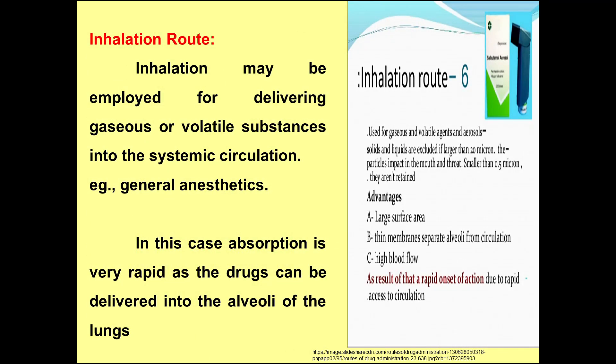Next let us see the inhalation routes. Asthma patients can have their drugs in the form of inhalation route. Inhalation may be employed for delivering gaseous drugs or volatile substances into the systemic circulation; this is particularly helpful in general anesthetics. Absorption is very rapid as drugs can be delivered directly into the alveoli of the lungs. An important point: solid or liquid medicaments larger than 20 microns cannot be utilized in the inhalation route. Advantages include large surface area, thin membranes separating alveoli from circulation, and high blood flow, resulting in rapid onset of action.